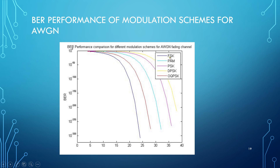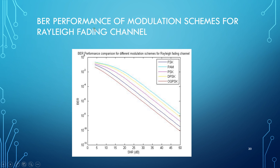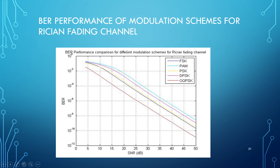Now let us look at the BER performance of the modulation schemes for all other schemes on the AWGN channel. From the figure, we can see that FSK has the least bit error rate, thus giving better performance, whereas DPSK has the highest bit error rate. Next, for the Rayleigh fading channel, PAM has the highest bit error rate compared to OQPSK, which gives the least bit error rate and thus the best performance. For the Rician fading channel, PAM again has a very high bit error rate compared to OQPSK, and thus OQPSK gives better performance when compared to all other modulation schemes.